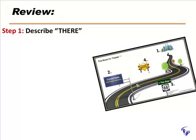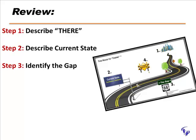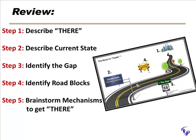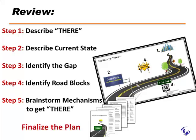Okay, a quick review. Step 1: describe your 'there.' Step 2: describe the current state. Step 3: identify the gap. Step 4: identify your potential roadblocks. And Step 5: brainstorm your mechanisms to get you there. Then, of course, seal the deal by finalizing your plan.